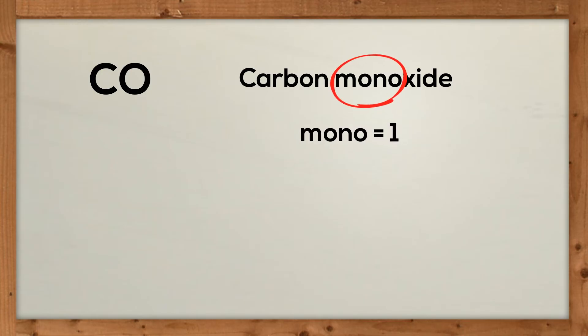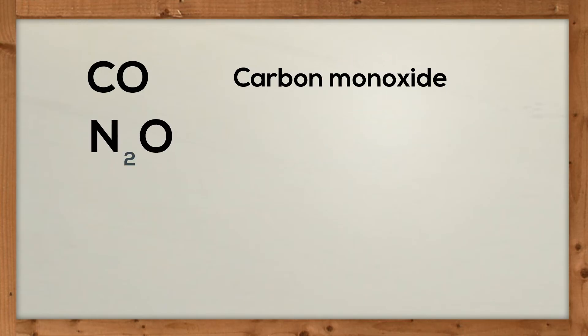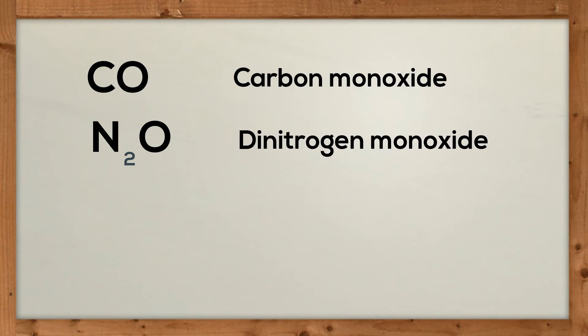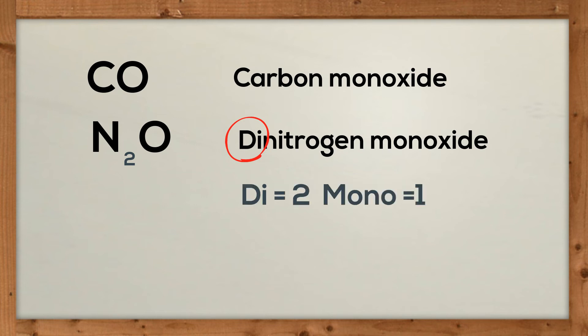Up next is N2O. Now we have two nitrogens, so we will use a prefix of di. So it will be dinitrogen monoxide, because you only have one oxygen. Also notice that instead of using the full element name oxygen for the second term, you use the suffix -ide.